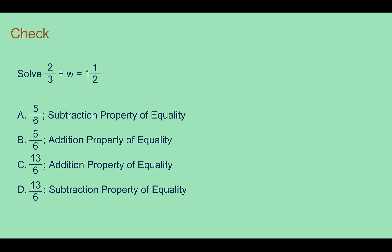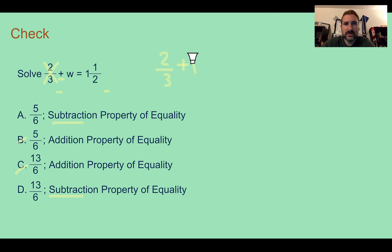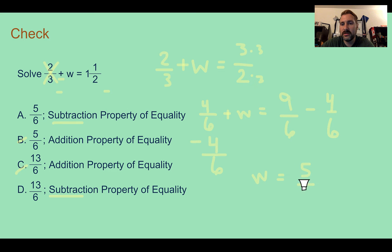Check your understanding: Solve 2 thirds plus w equals 1 and a half. Choose the correct answer and which property you needed to use. Since this is plus 2 thirds, I need to subtract from both sides to cancel it out, leaving choices a or d. Converting 1 and a half to the improper fraction 3 halves, and finding a common denominator of 6: 2 thirds becomes 4 sixths, and 3 halves becomes 9 sixths. Subtracting 4 sixths from both sides gives w equals 5 sixths.